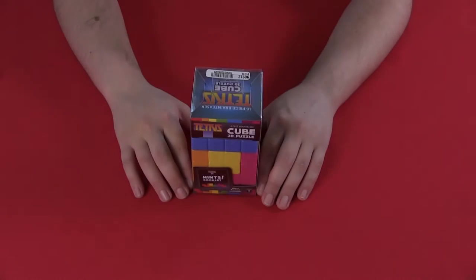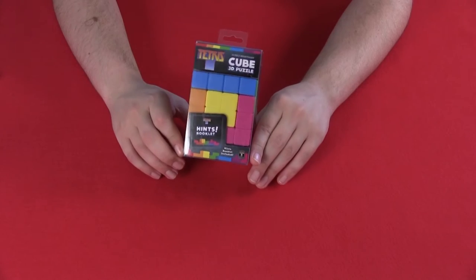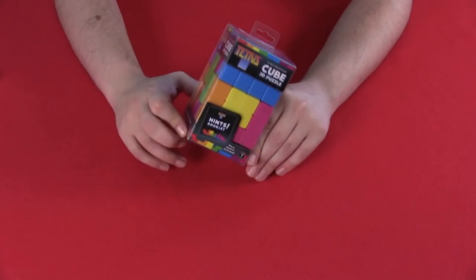Today we're looking at the Tetris Puzzle Cube. It has the principle of a Rubik's Cube, only you can take it apart and scramble it around.